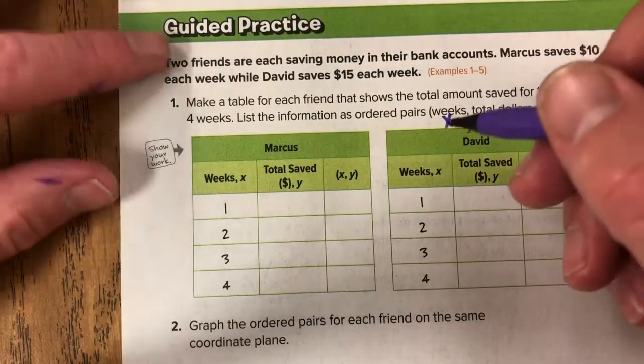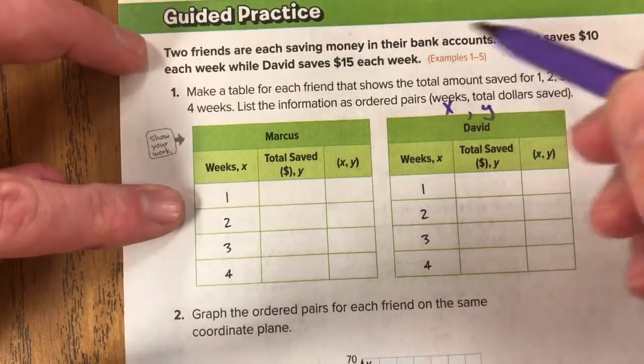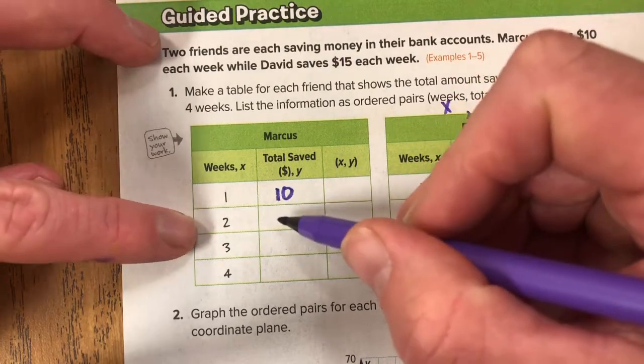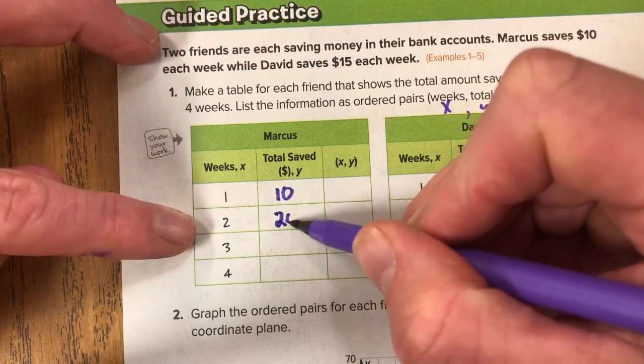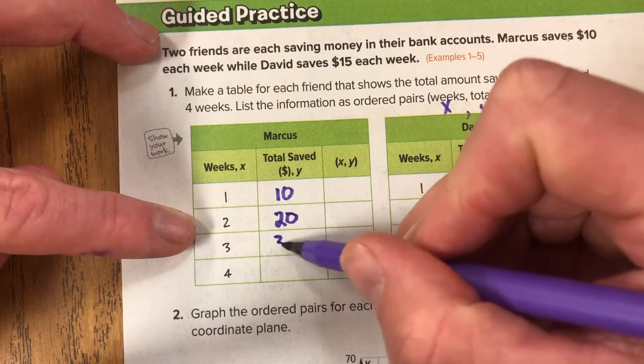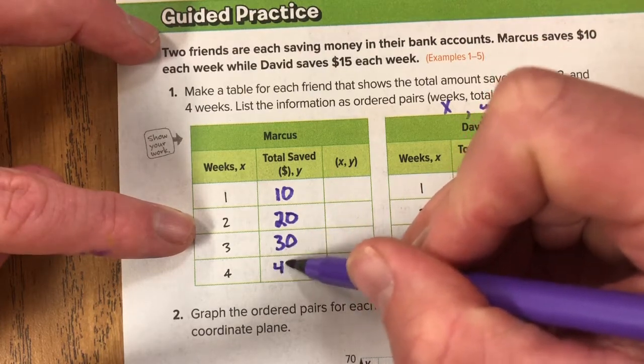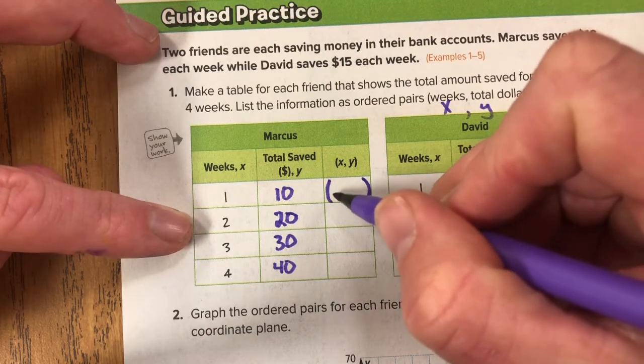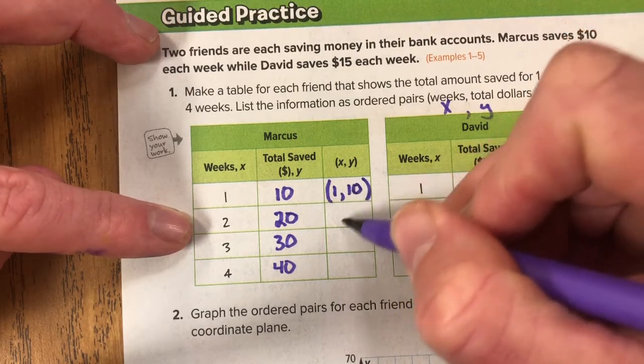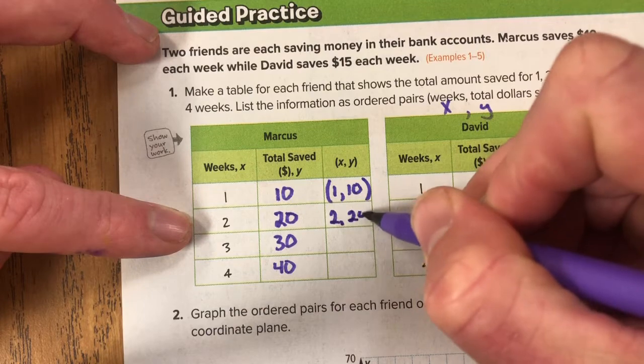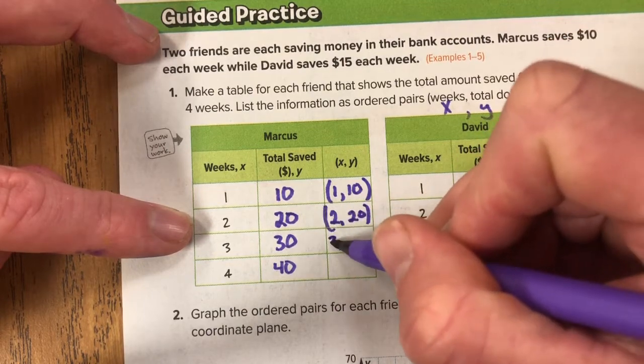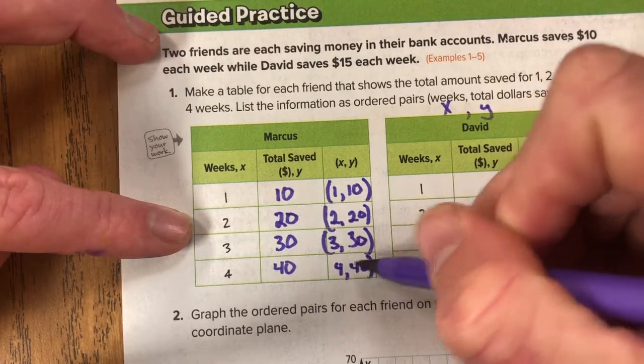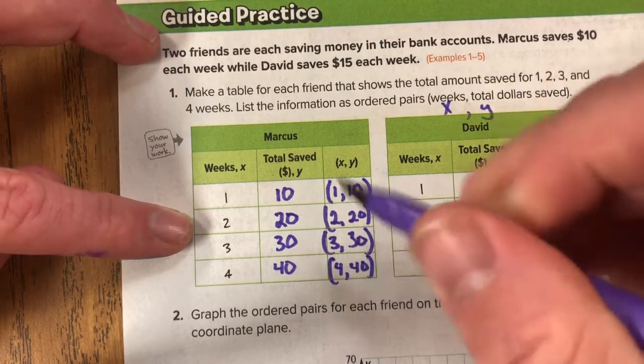All right so remember Marcus he saves 10 bucks every week so after one week he would have saved $10. After 2, 20. After 3, 30. And after 4, 40. So then if we were gonna do this in our coordinates it would be 1, 10, 2, 20, 3, 30, and 4 is paired with 40. And these are your X and your Y.